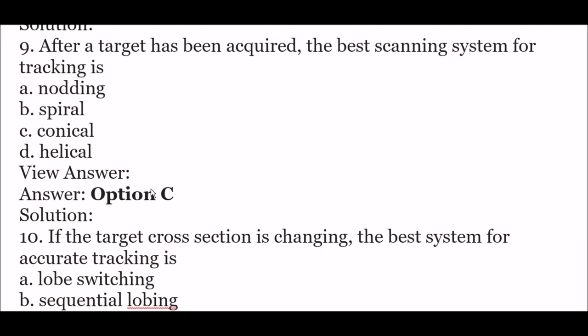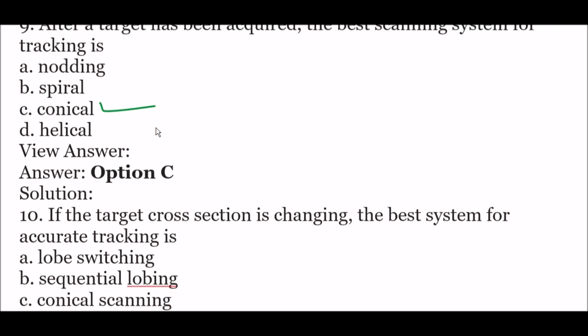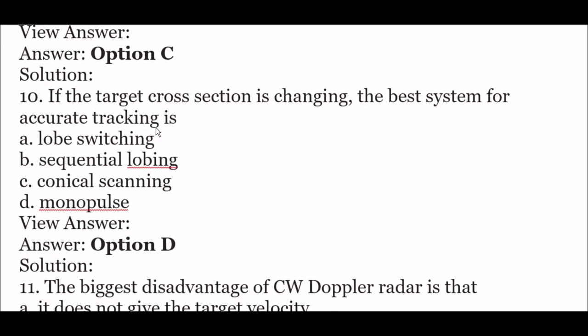Next question: after a target has been acquired, the best scanning system for tracking is — option A: nodding, option B: spiral, option C: conical, option D: helical. The right answer is option C — conical. After a target has been acquired, the best scanning system for tracking is conical.